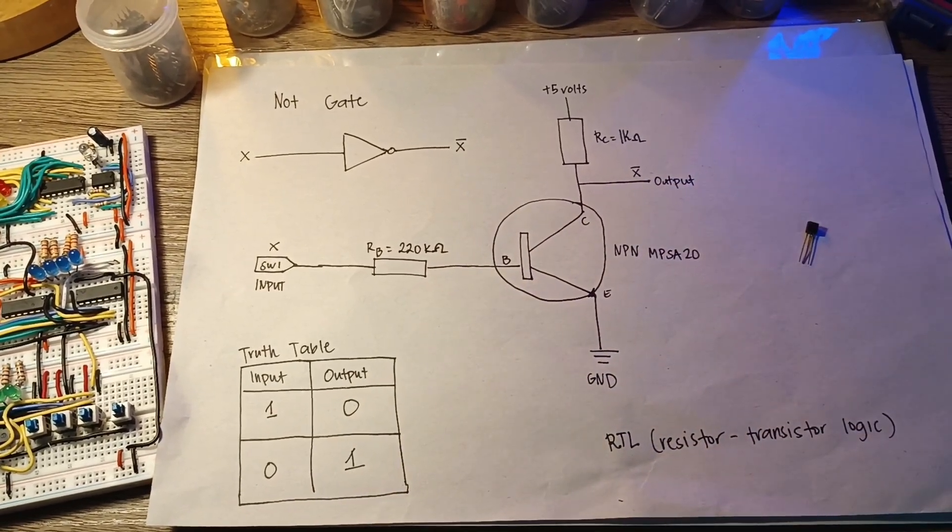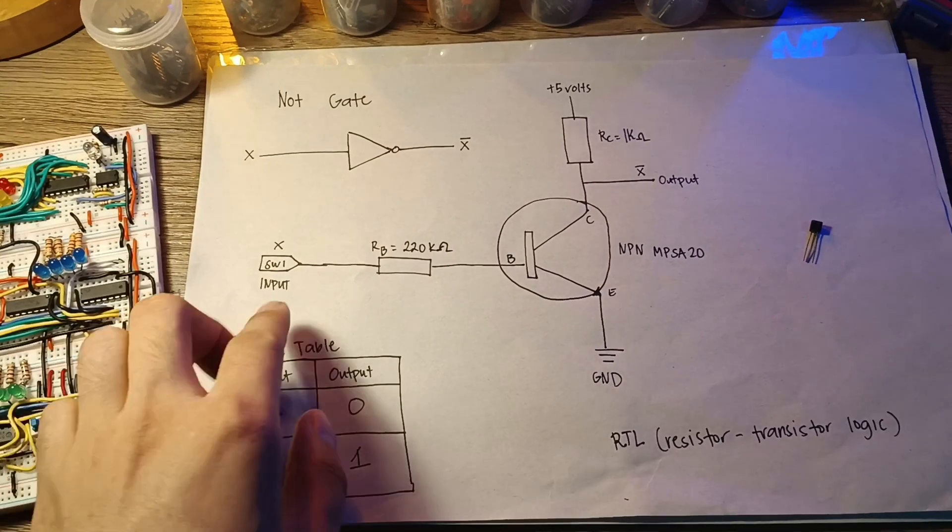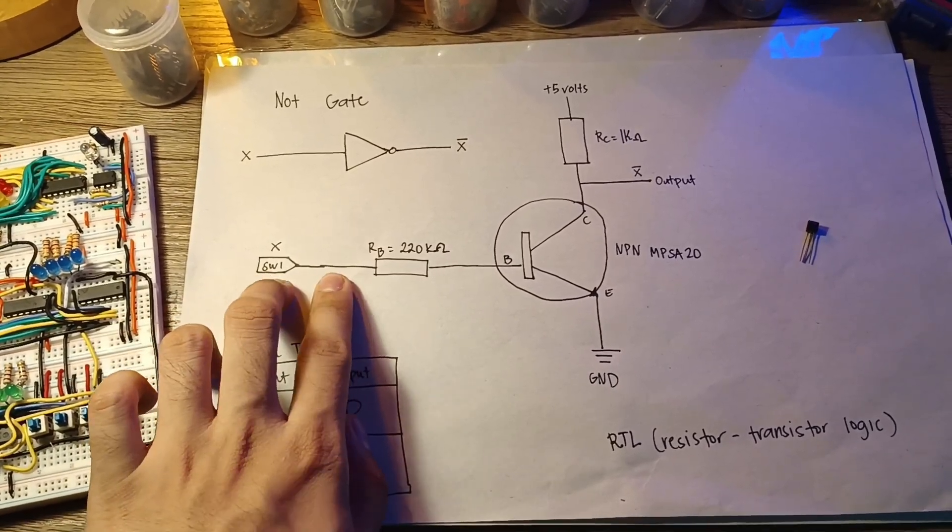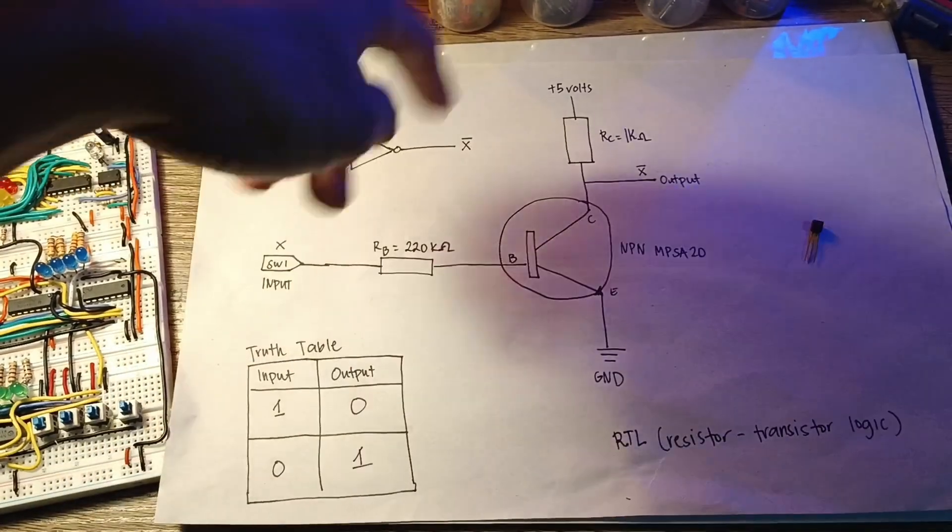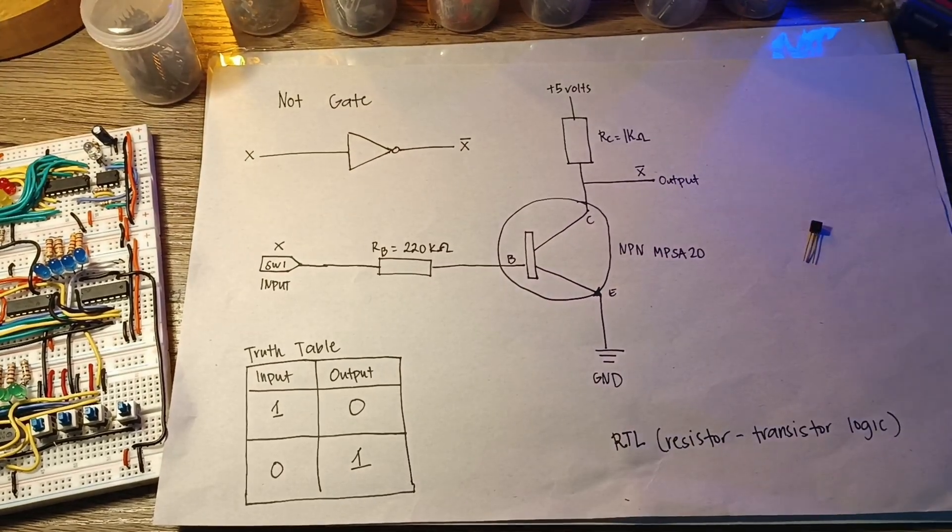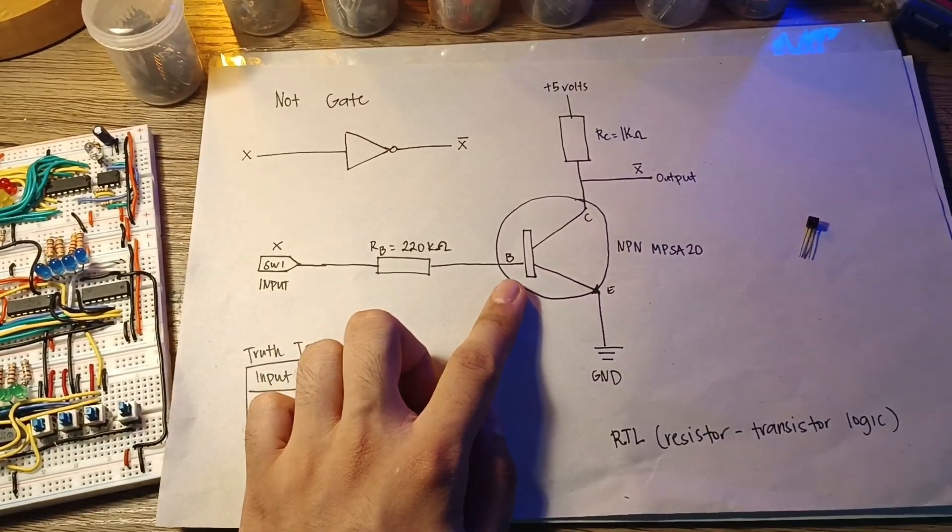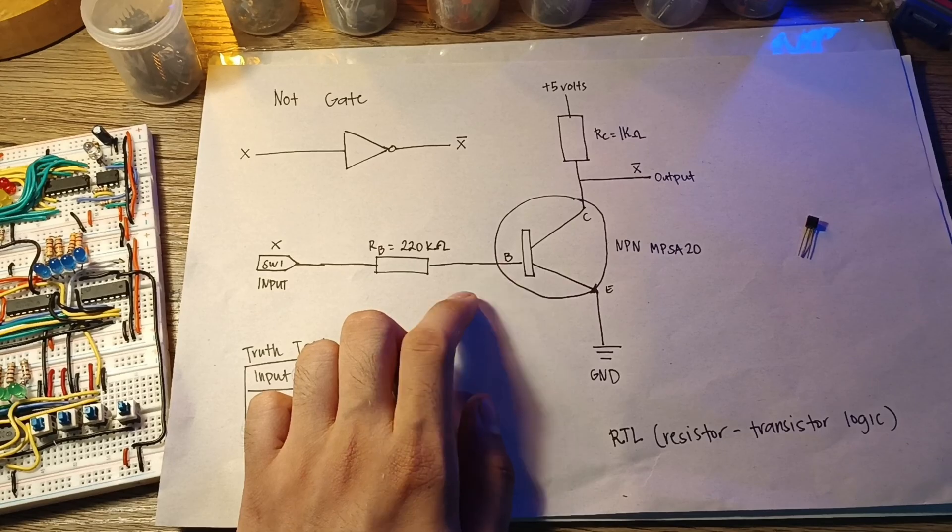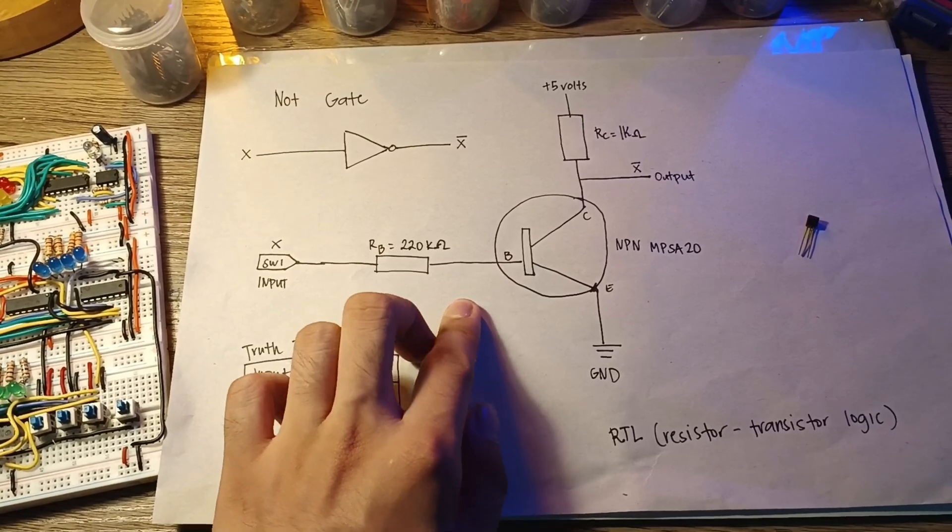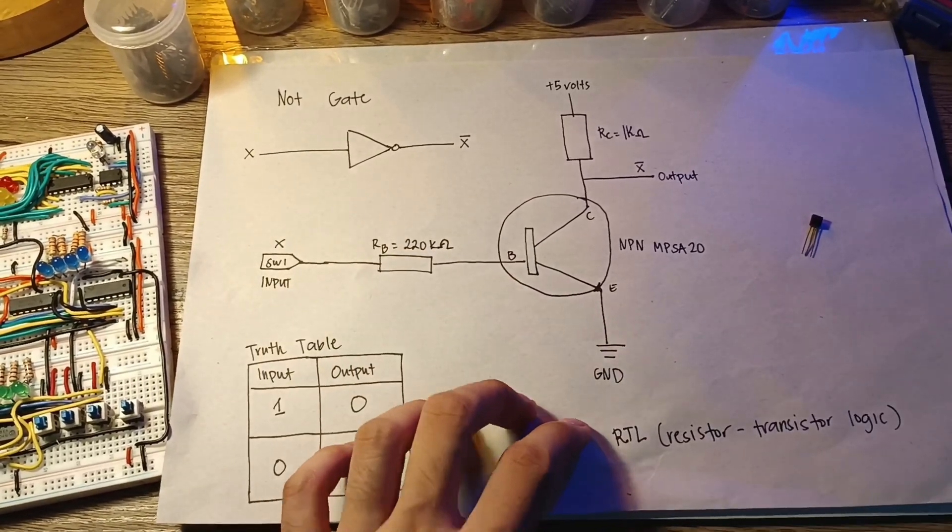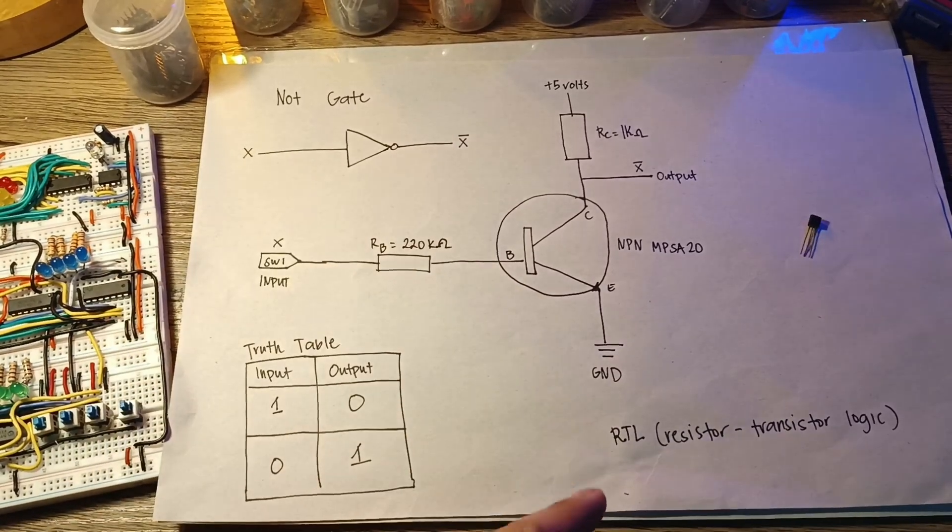When the input signal is at low or zero volts, the transistor will be in cutoff and no current will flow into the base. In this state, the transistor is non-conductive and the output is at the high voltage. If we input a zero, it will output a one.